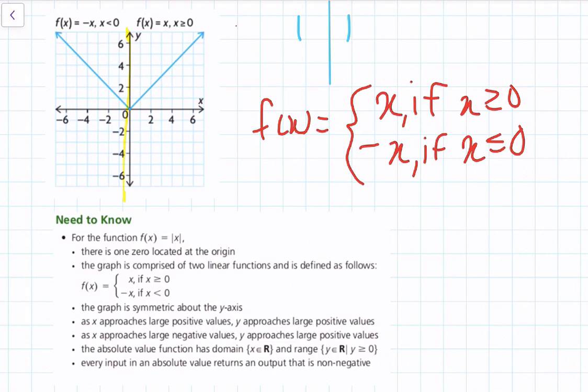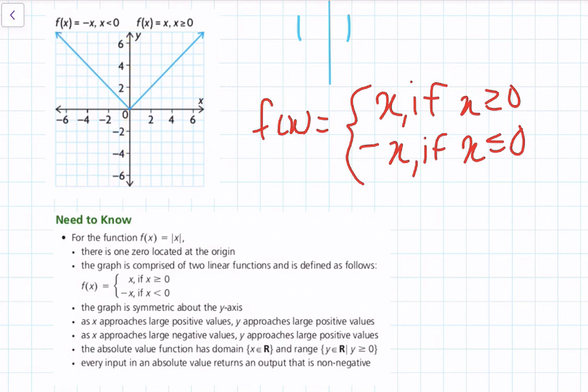As x approaches large positive values, y approaches large positive values. No matter how big x keeps getting, y will also keep getting equally big. Similarly, no matter how small (negative) x gets, y will keep getting big as well. The absolute value function has domain x ∈ ℝ, and range y ∈ ℝ such that y ≥ 0.